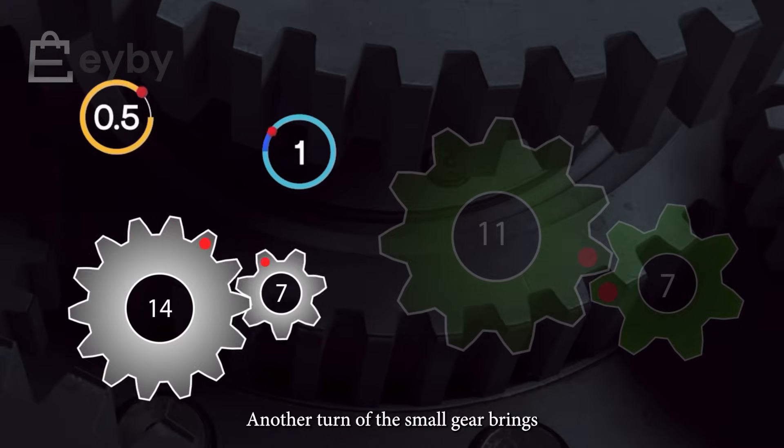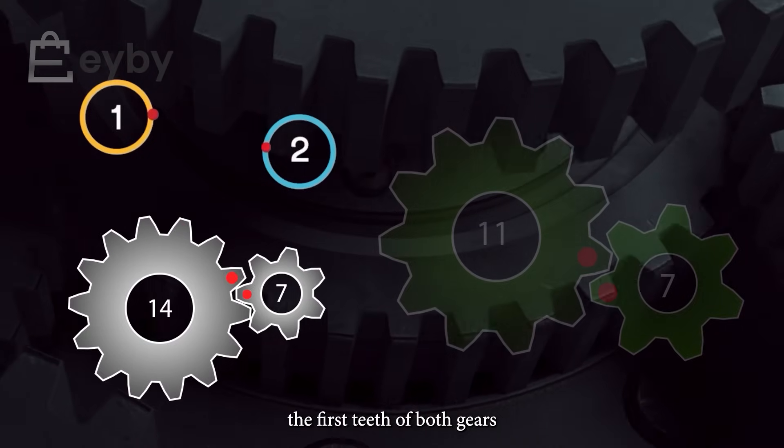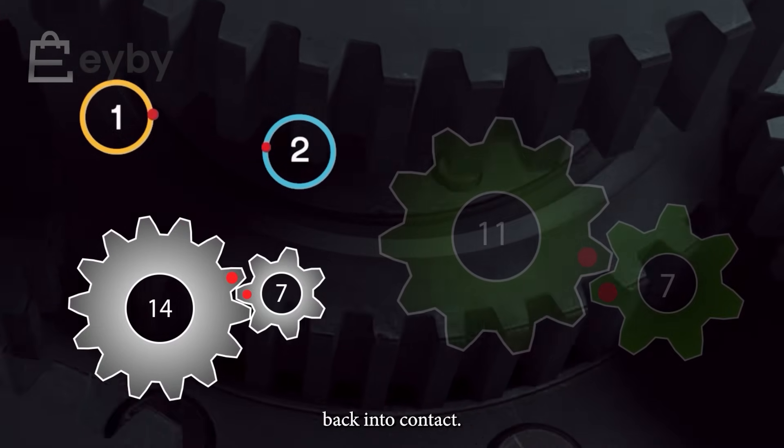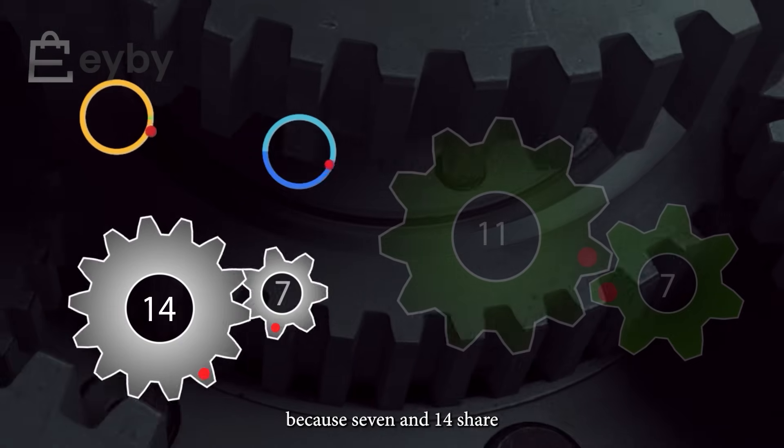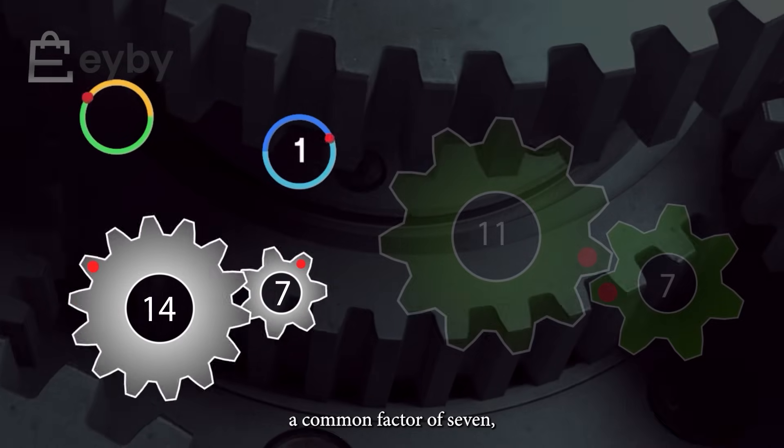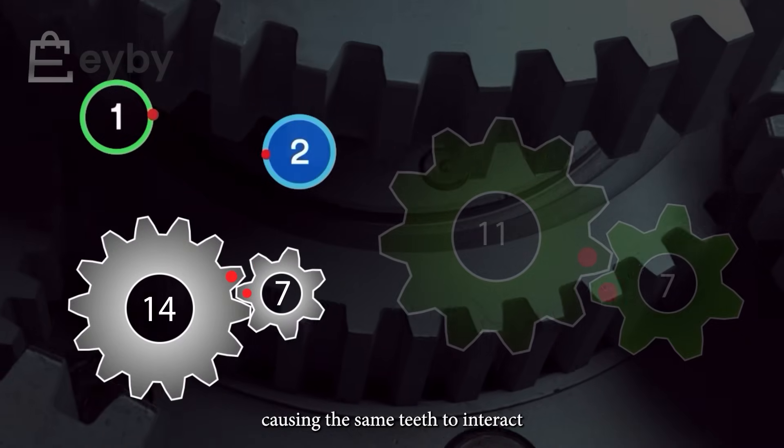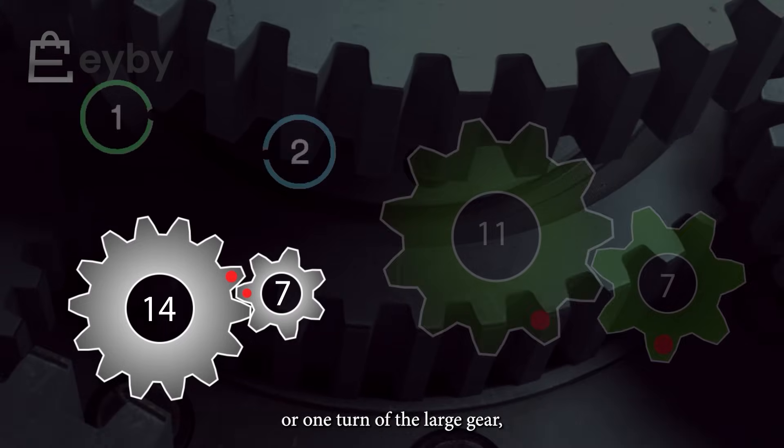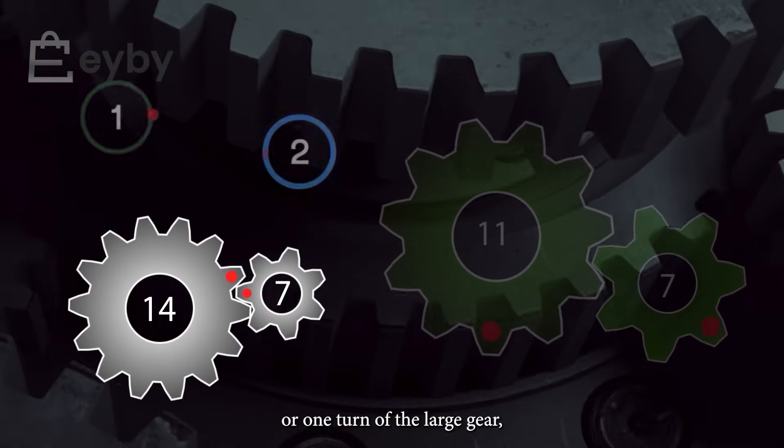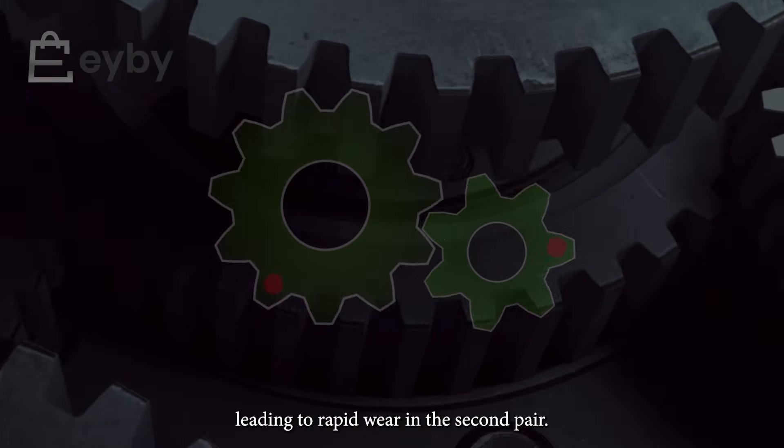Another turn of the small gear brings the first teeth of both gears back into contact. This pattern repeats because 7 and 14 share a common factor of 7, causing the same teeth to interact after every two turns of the small gear or one turn of the large gear, leading to rapid wear in the first pair.